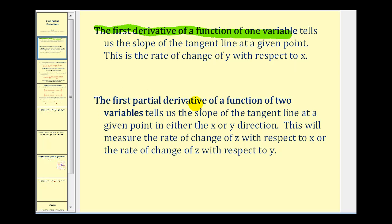The first partial derivative of a function of two variables tells us the slope of the tangent line at a given point in either the x direction or y direction. Therefore, the partial derivative measures the rate of change of z with respect to x, or the rate of change of z with respect to y.